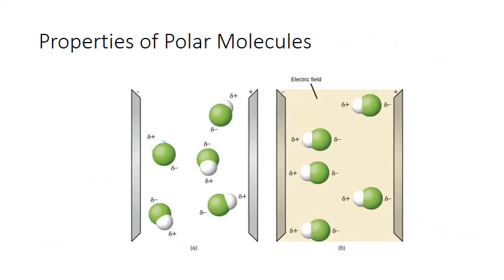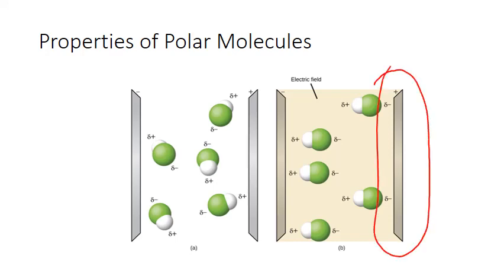The development of partial charges from unequal sharing of electrons in a covalently bonded molecule can have interesting impacts on the properties of that molecule. For example, if you place a sample of a polar covalent substance in an electric field, the molecules will actually align themselves so that all the partial negative ends are pointing to the positive electrode associated with that field.